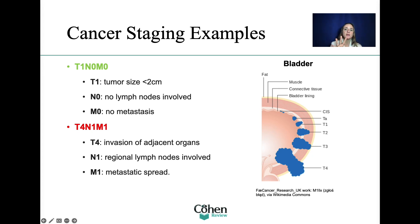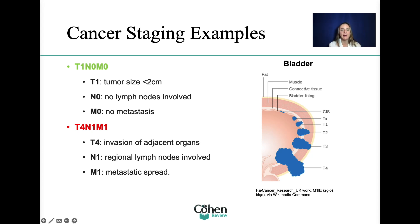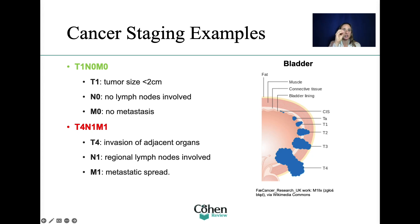Second example: T4N1M1. T4 means the cancer has grown so much that it has already affected adjacent organs or surrounding tissues. N1 means it has already spread to lymph nodes. M1 means it has metastasized to other parts of the body. You will not be asked to stage a cancer on the exam, but it is your job to comprehend what each letter stands for and what it means.